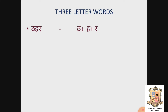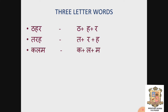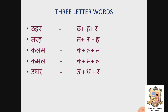Next, three-letter words (Teen akshar wale shabd): Ta plus Ha plus Ra — Tahar; Ta plus Ra plus Ha — Tarah; K plus La plus Ma — Kalam; K plus Ma plus La — Kamal; U plus Ta plus Ra — Utar; E plus Ta plus Ra — Itar.